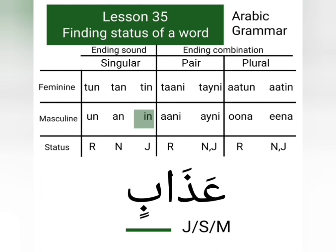So our last option is to see the ending sounds of masculine words. This word does not have the ending sound un, nor does it have the ending sound an, but it has the ending sound in. Singular masculine words with ending sound in have the status jar. So the status of this word is jar, and we write below azabin: j, s, m — j means jar, s means singular, and m means masculine.